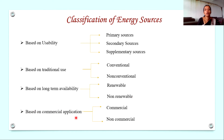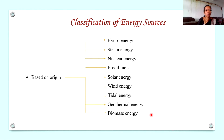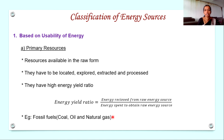The next classification is based on commercial application — that is, whether they are used for any commercial applications or not, giving us commercial and non-commercial energy sources. The next classification is based on origin, that is, based on how they are generated. Based on that, the classifications are hydro energy, steam energy, nuclear energy, fossil fuel, solar energy, wind, tidal, geothermal, and biomass energy. So these are the main classifications, and now let us see each of these in detail.